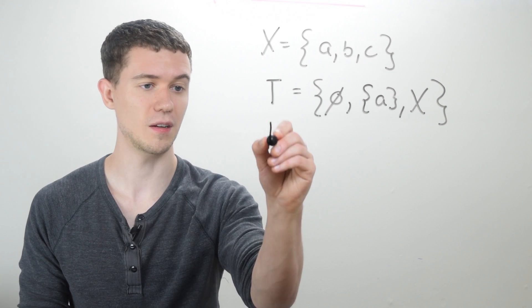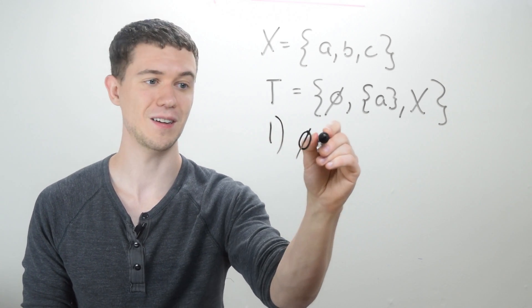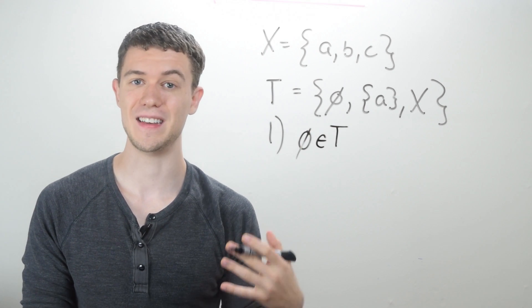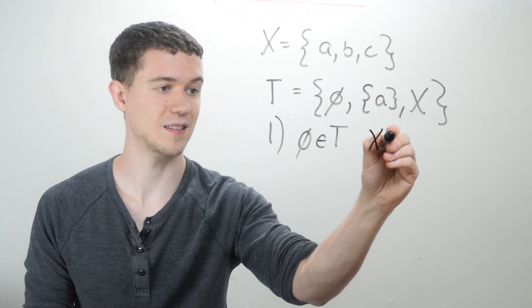Well, we have to check. So let's see, number one, is the empty set in there? Well, yep, it's right there. So the empty set is in T, that's good. Is the entire set, the ambient set, X in T? Ah, well, it's right there. So yes, X is also in T.